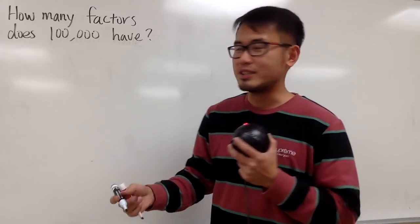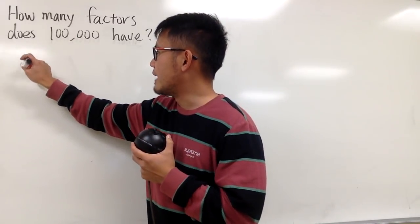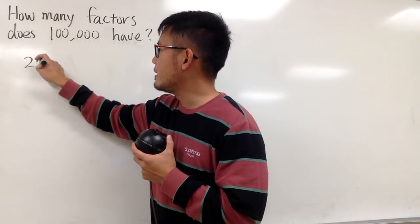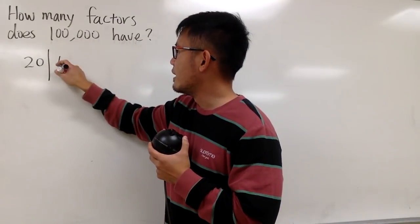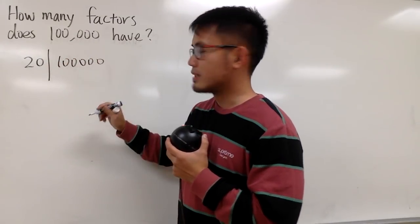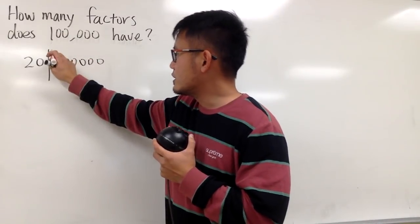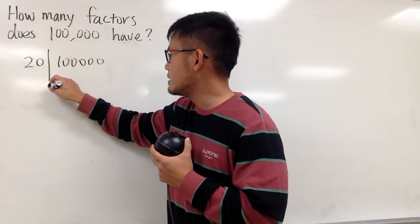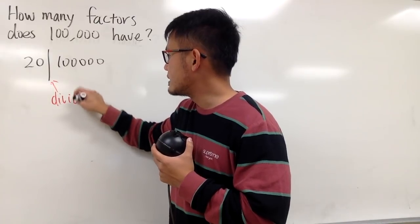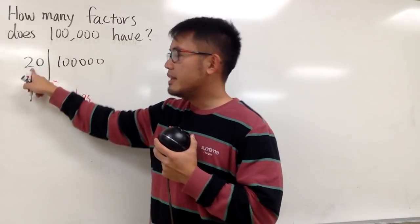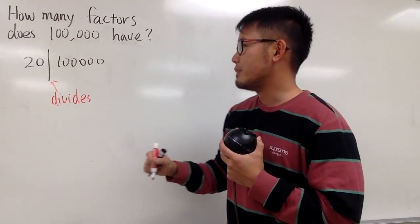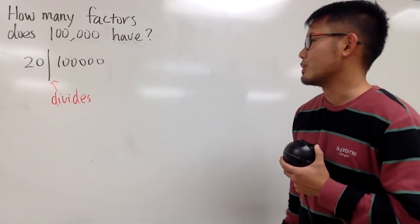But let me just introduce you some notations as well. I know 20 is a factor because we know 20 divides 100,000. This vertical bar, just make sure that it's long enough like this, and this means divides.